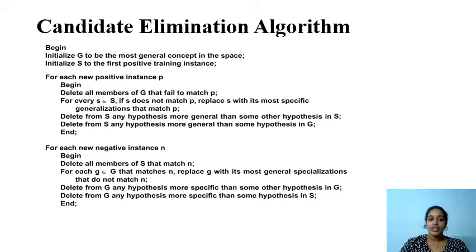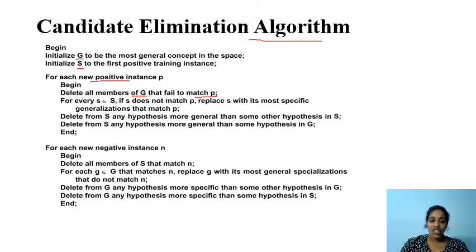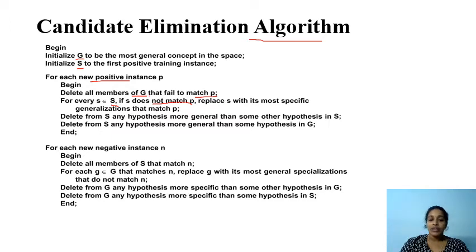Now we are going to discuss how the Candidate Elimination Algorithm works. This algorithm maintains two lists, G and S. On seeing each positive instance P, we make some modifications in G and S. Delete all members of G that fail to match P. If there exists some hypothesis in S that does not match P, we must modify S so that it accepts the positive example.